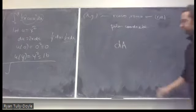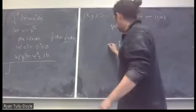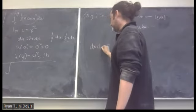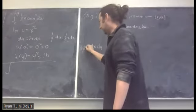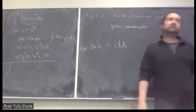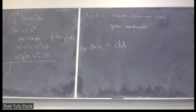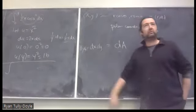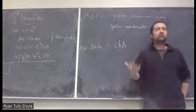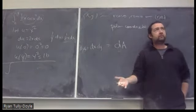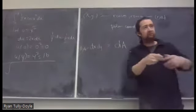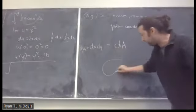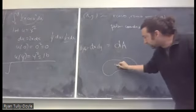We've been writing dA = dx dy or dy dx. What do we actually mean by that? When I say a little tiny amount of area equals a little tiny change in x times a little tiny change in y, I'm saying I can think about cutting a region up into little itty-bitty pieces that look like rectangles of width dx and height dy.